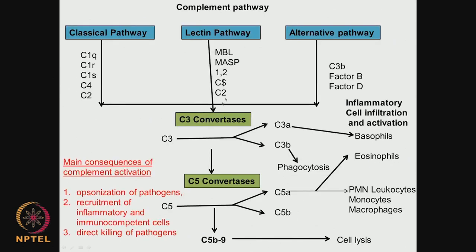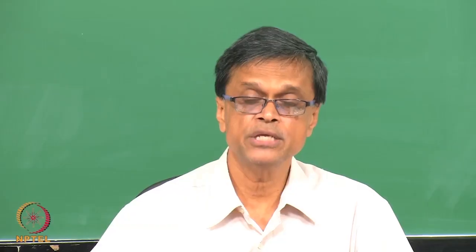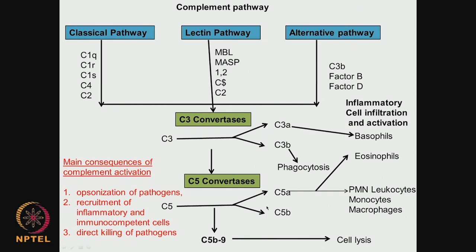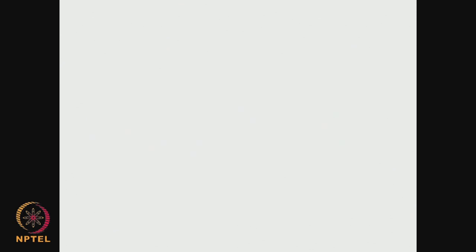So C3, C4 and other complement proteins have specific jobs — these are the roles of these complement proteins. It is very fascinating what is happening inside the host system. The complement system identifies the pathogens, brings the inflammatory and immunocompetent cells, and directly kills the pathogens. All 3 things are done by the complement system. So complement activation, and how can we prevent this complement activation?